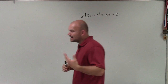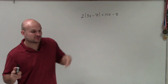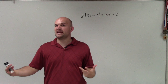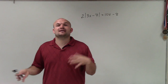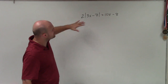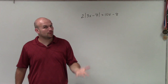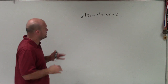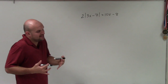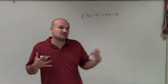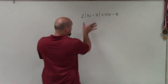When solving absolute value inequalities, we've got to make sure we do two things. One, we set up two cases — the positive and the negative — and we always go back and check our solutions, especially when we have variables on both sides. The first thing we need to do is isolate the absolute value. Once we've isolated the absolute value, then we can create our two cases.